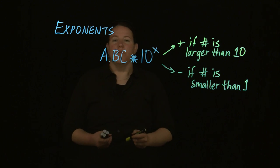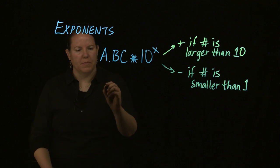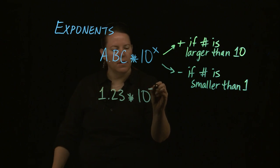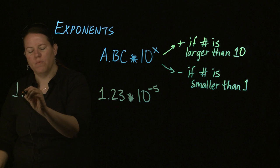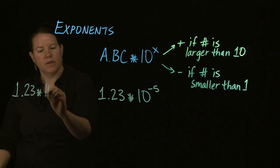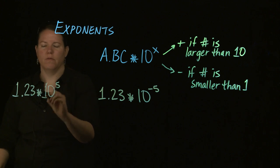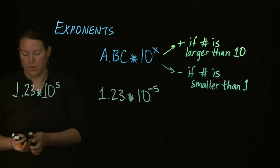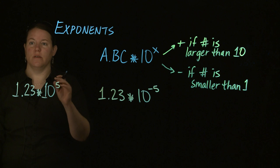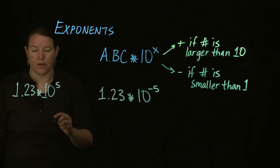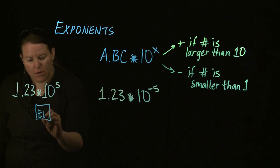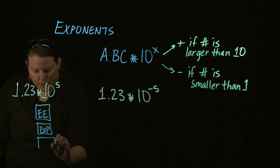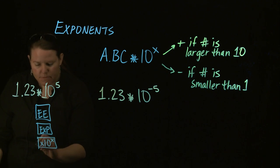If we get a number like 1.23 times ten to the negative fifth versus 1.23 times ten to the positive fifth, the way you plug this into your calculator differs only in the negative versus the positive. You would search your scientific calculator for a button that says EE or EXP, or sometimes it says times ten to the X.